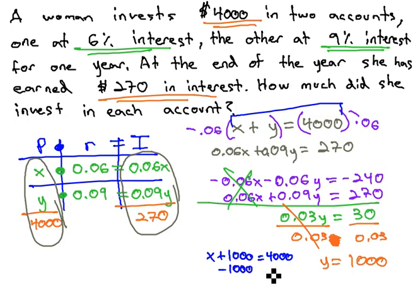Subtract 1,000 from both sides, and x, the other account, has 3,000 in it.